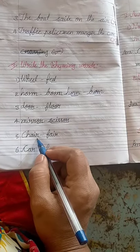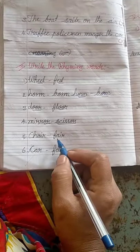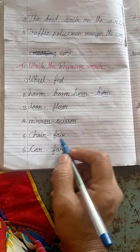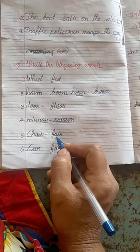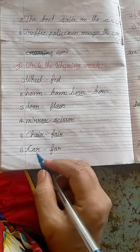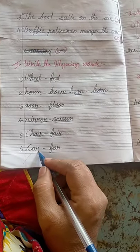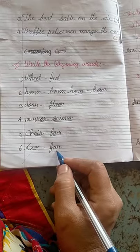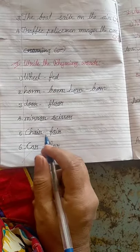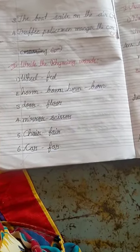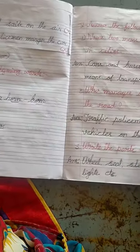Chair - fair, these share the AIR rhyming pattern. Car - far, these share the AR rhyming pattern. These are the rhyming words.